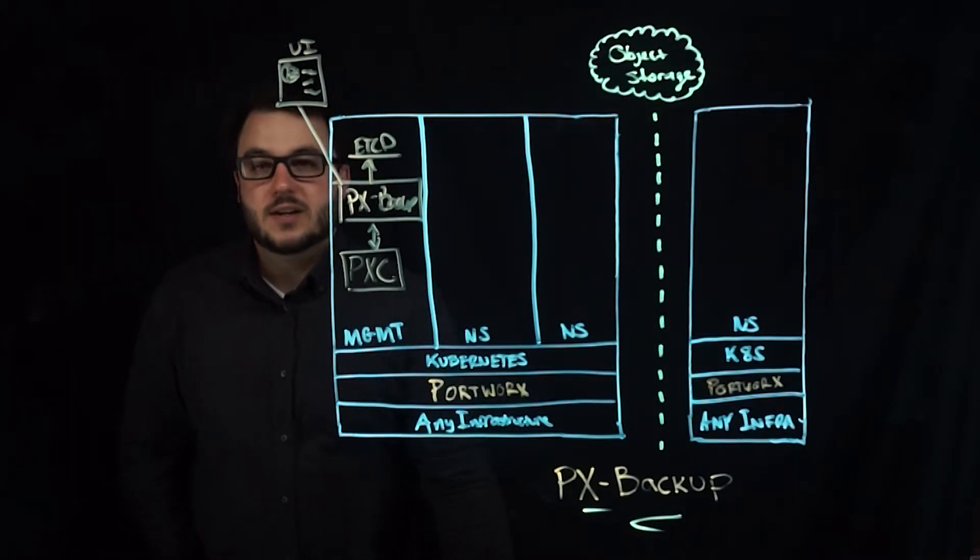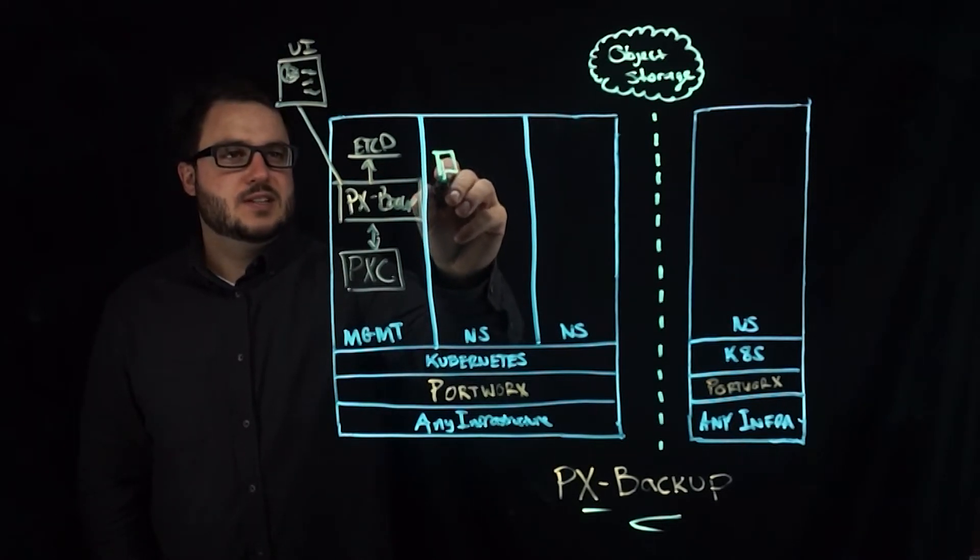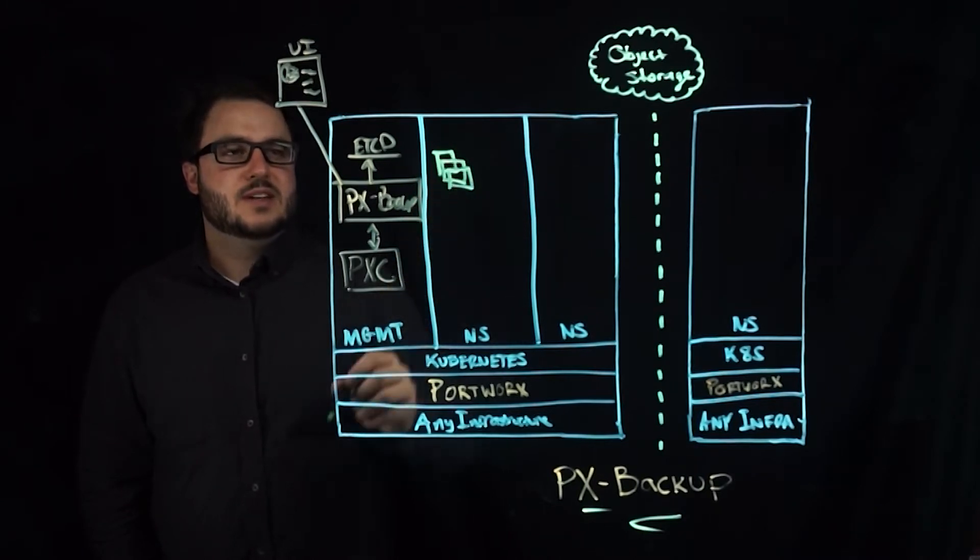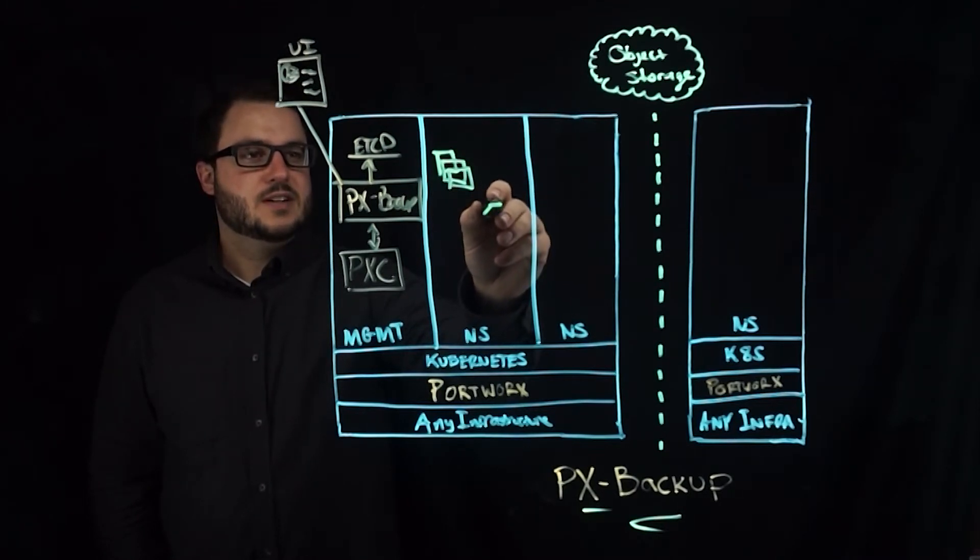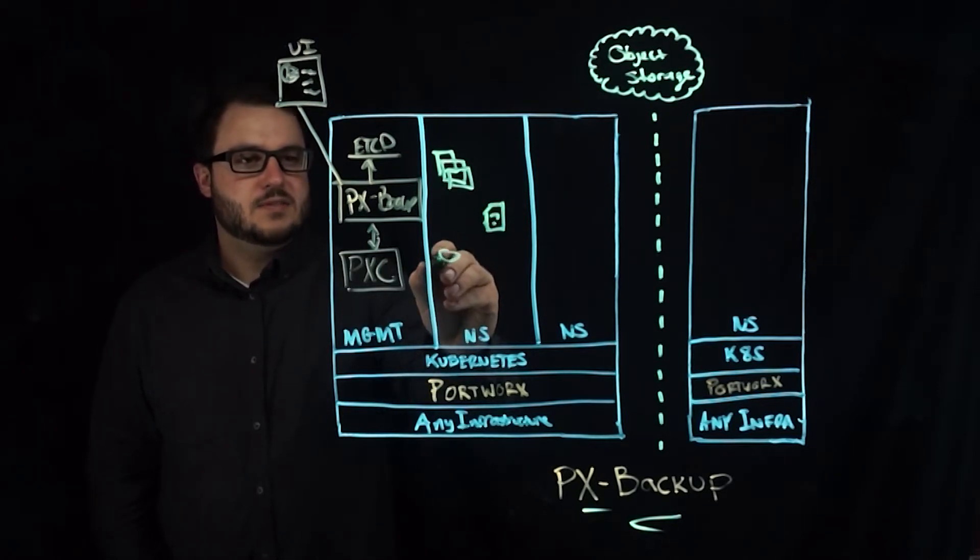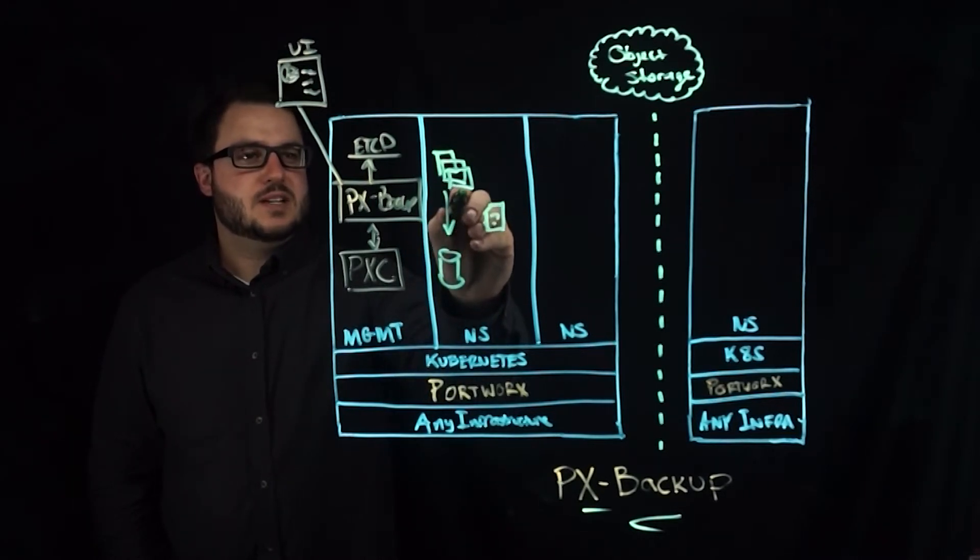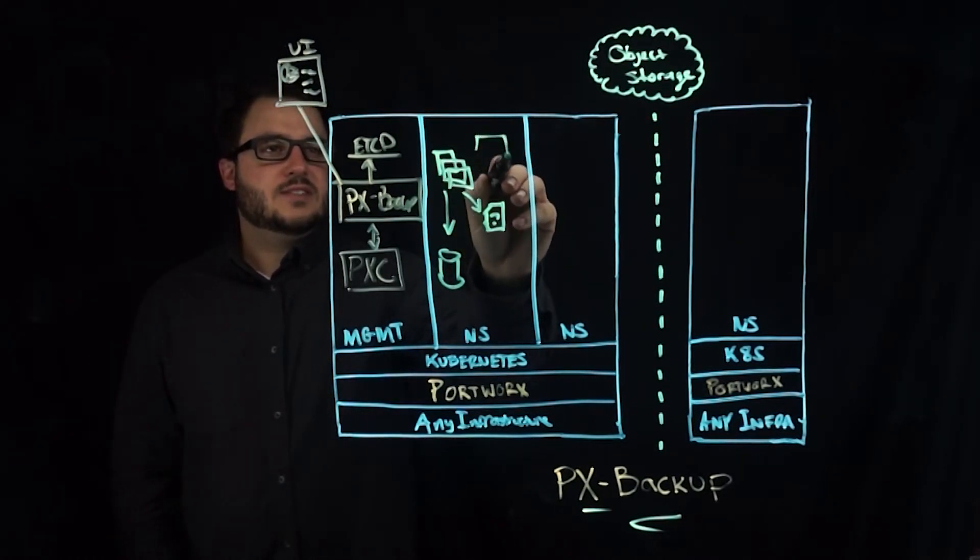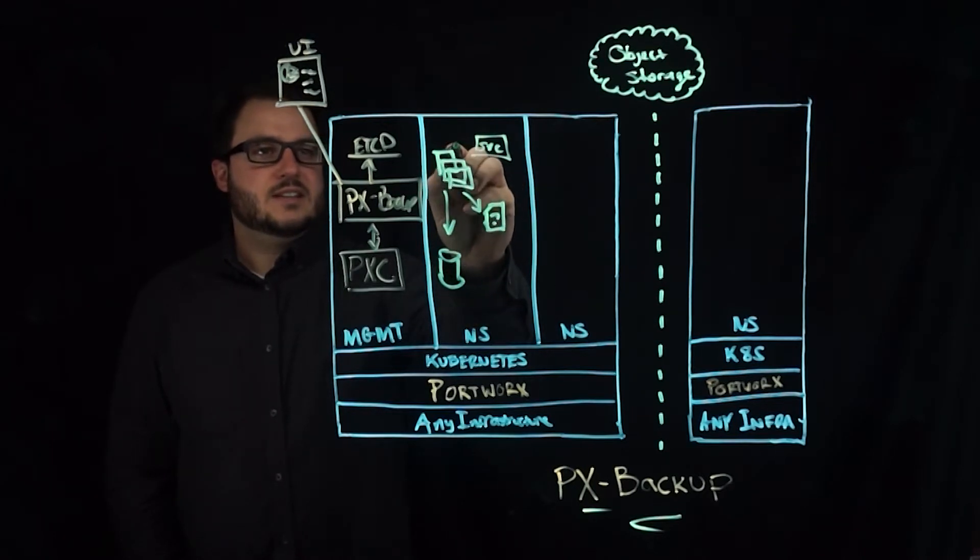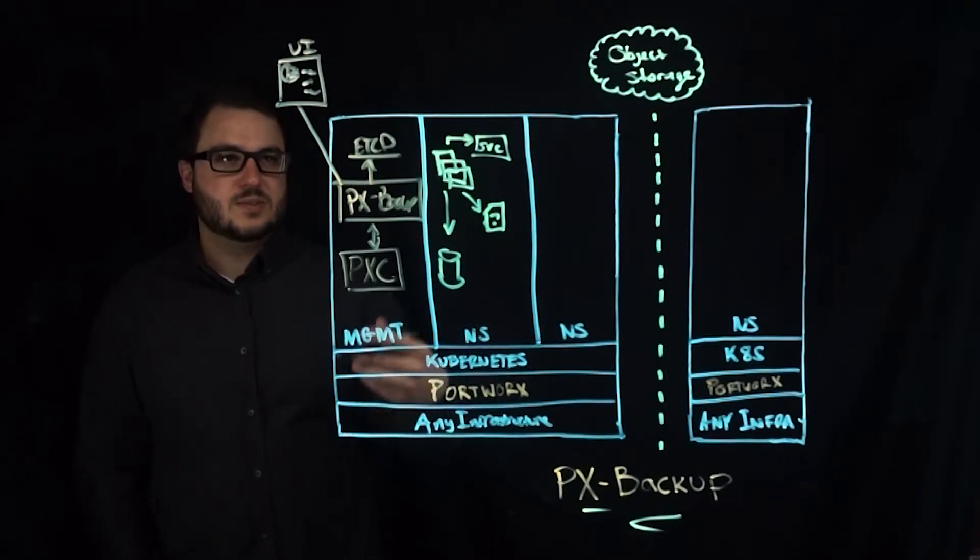Before we get started with what a backup is we first need to understand what an application is. So an application in a namespace may consist of many different pods, which is part of a deployment. It may have a secret associated with it. It might have a PVC associated with it. And these pods may use the PVC. They may reference the secret. They may have a service that gives access to the application across different namespaces in Kubernetes or from the outside world.